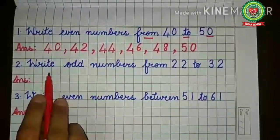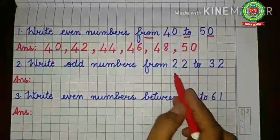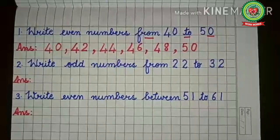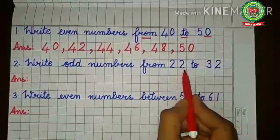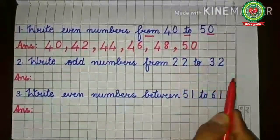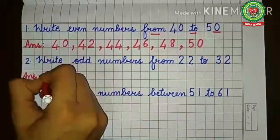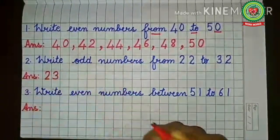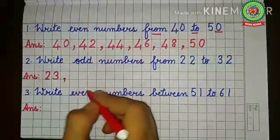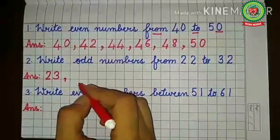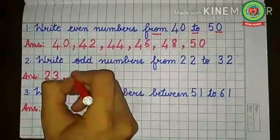Next, write odd numbers from twenty-two to thirty-two. Twenty-two ends with two, so it is even — we skip it. Twenty-three ends with three, which does not come in the table of two, so twenty-three is an odd number. Twenty-four ends with four — even — so we skip it. Twenty-five ends with five, so twenty-five is an odd number.